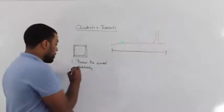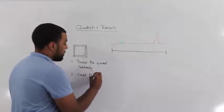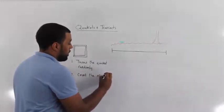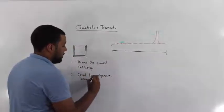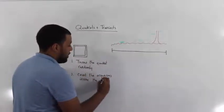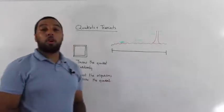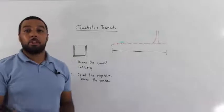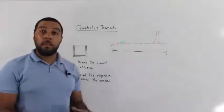What we would then do is count the organisms inside the quadrat. We would then throw the quadrat at least ten times so that we can get an average number of organisms within that quadrat.